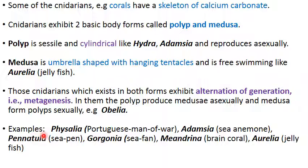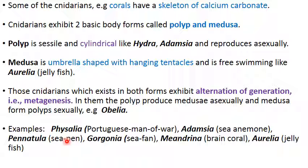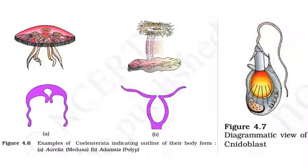Examples of cnidarians include: Physalia (Portuguese man-of-war) — which has only the medusa stage with very long tentacles and numerous stinging cells that can kill small prey and inflict injuries to humans; Adamsia (sea anemone); Pennatula (sea pen); Gorgonia (sea fan); Meandrina (brain coral); and Aurelia (jellyfish).